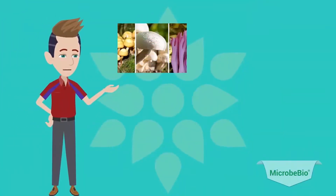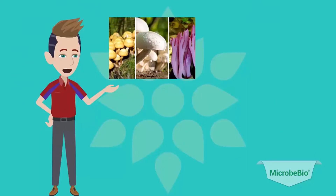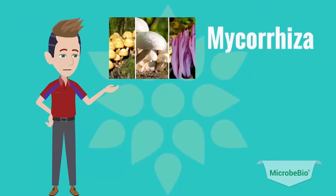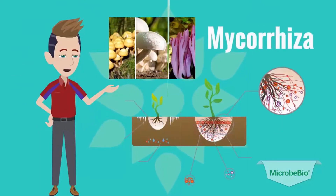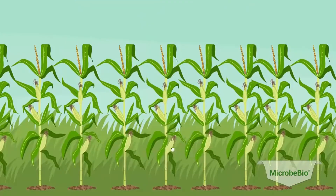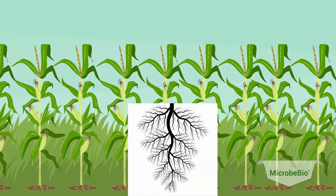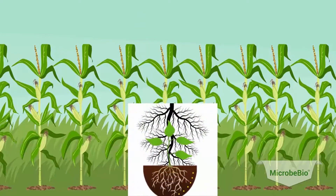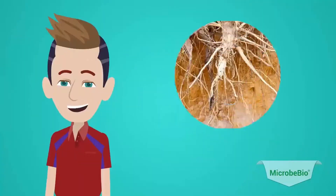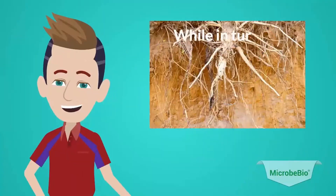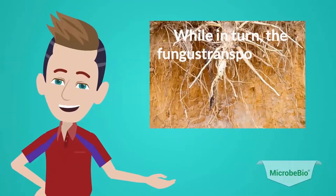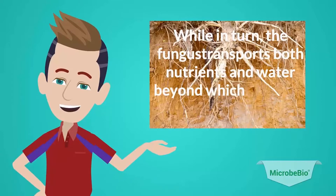Secondly, we will look at beneficial fungus like mycorrhiza and its functions. Like bacteria, mycorrhiza is also known in a symbiotic relationship with the plant's roots. The roots of the plant provide the carbon that the fungus needs to grow, while in return the fungus transports both nutrients and water beyond which the roots can reach.